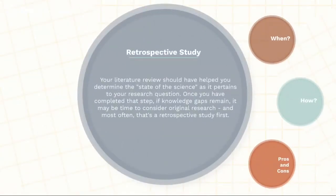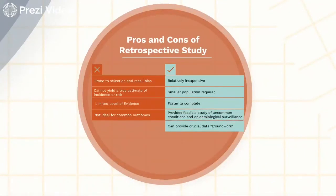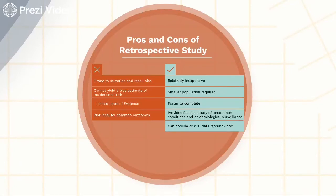What about the pros and cons of retrospective study? On the cons side, these studies are naturally prone to more bias than other formats, including selection and recall bias. There are also limits to what you can learn — you can't truly estimate incidence or risk from a retrospective analysis, and if you read a retrospective paper with that claim, the conclusions are overstated. There is naturally a limited level of evidence, and it's also not ideal for analysis of common outcomes. On the other hand, retrospective studies are relatively inexpensive, require smaller study populations, are much faster to complete, and are great at providing a feasibility study of uncommon conditions as well as epidemiological surveillance — providing crucial data groundwork upon which you and other researchers can build.